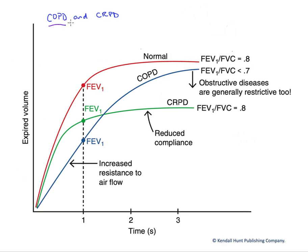COPDs tend to increase the resistance to airflow. CRPDs, caused by scarring, tend to reduce compliance — the distensibility of the lung.